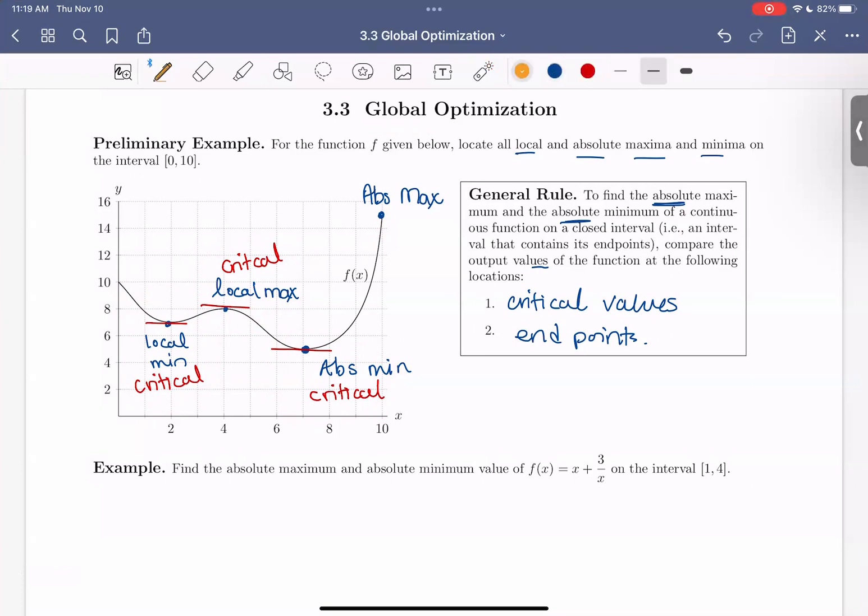One small note here is that this value, we don't consider this a local max. Though it is true that around this point, we have a maximum of our function, how we define local max or min is that on both sides of that point, our function needs to be smaller than the function value there. That's just a small point, but I wanted to address it here.